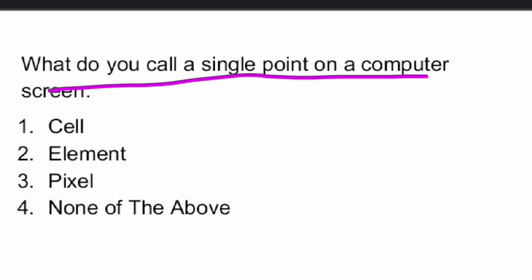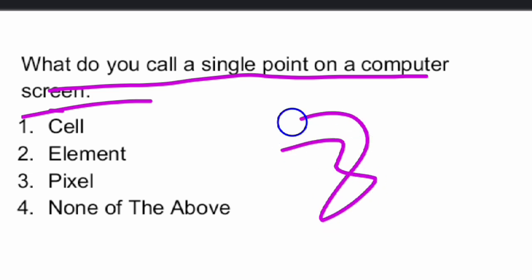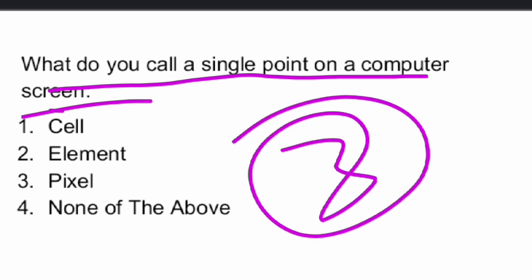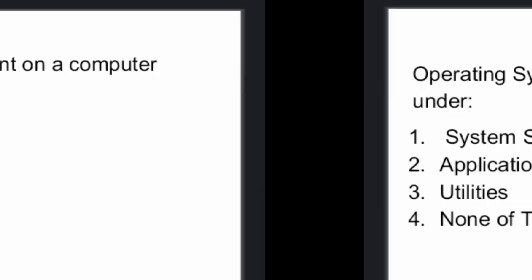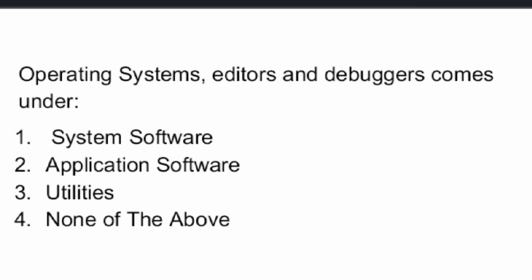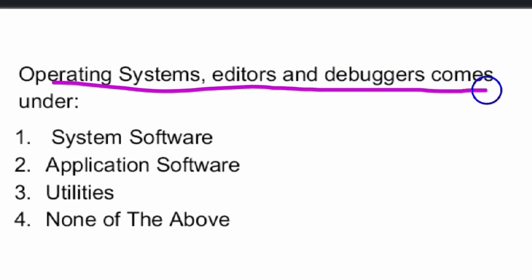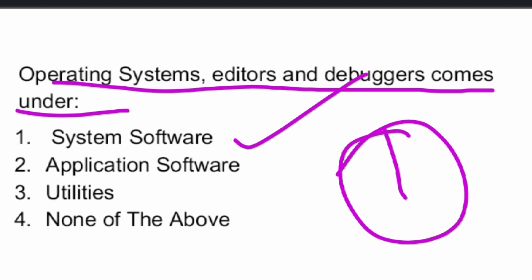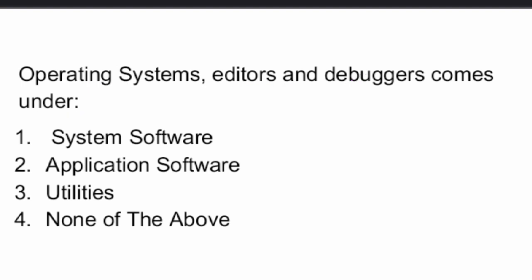What do you call a single point on a computer screen? We call it a pixel — option three. Next: operating systems, editors, and debuggers come under system software.